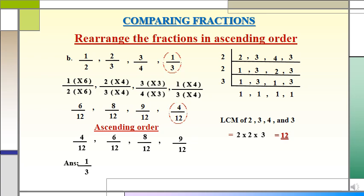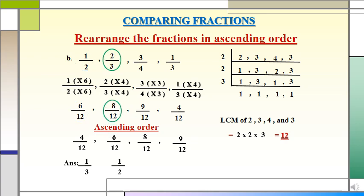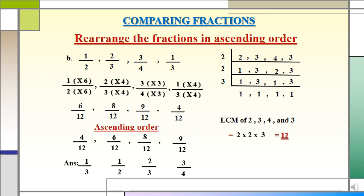The next fraction: 6/12 is the same as 1/2, hence the next smallest fraction is 1/2. 8/12 is the same as 2/3, hence 2/3 is the next fraction. And finally, 9/12 is the same as 3/4, hence 3/4 is the biggest fraction. Now we have arranged the fractions from small to big, with the smallest fraction being 1/3 and the greatest fraction being 3/4.